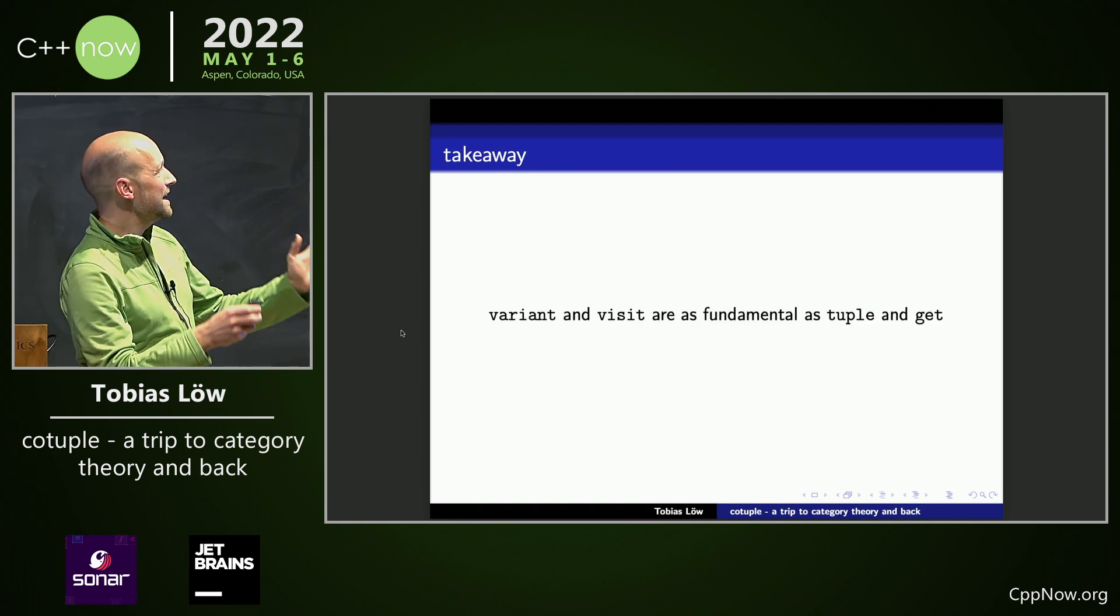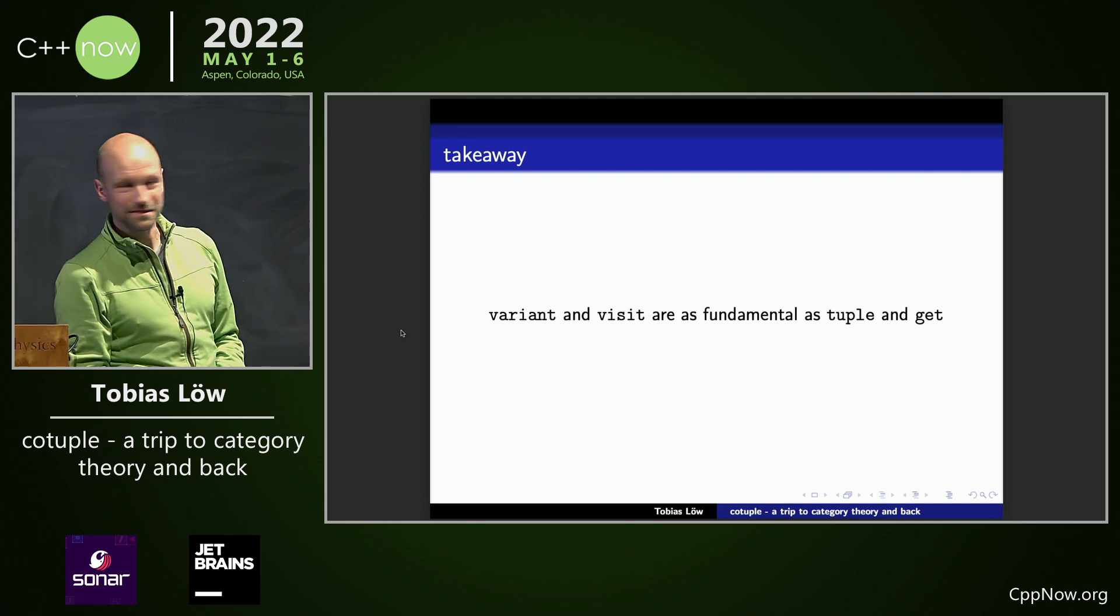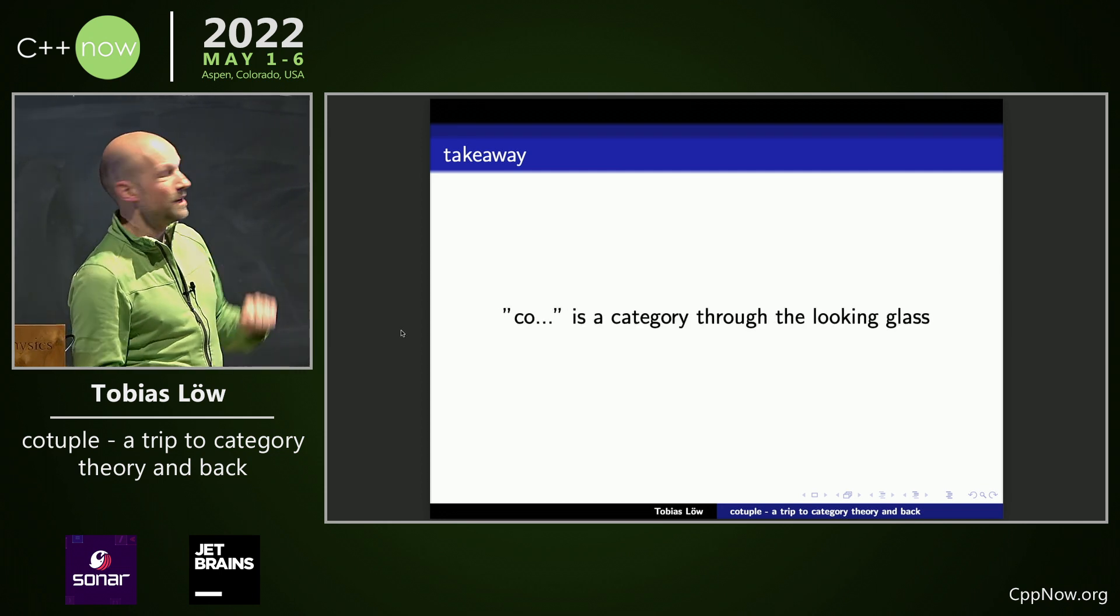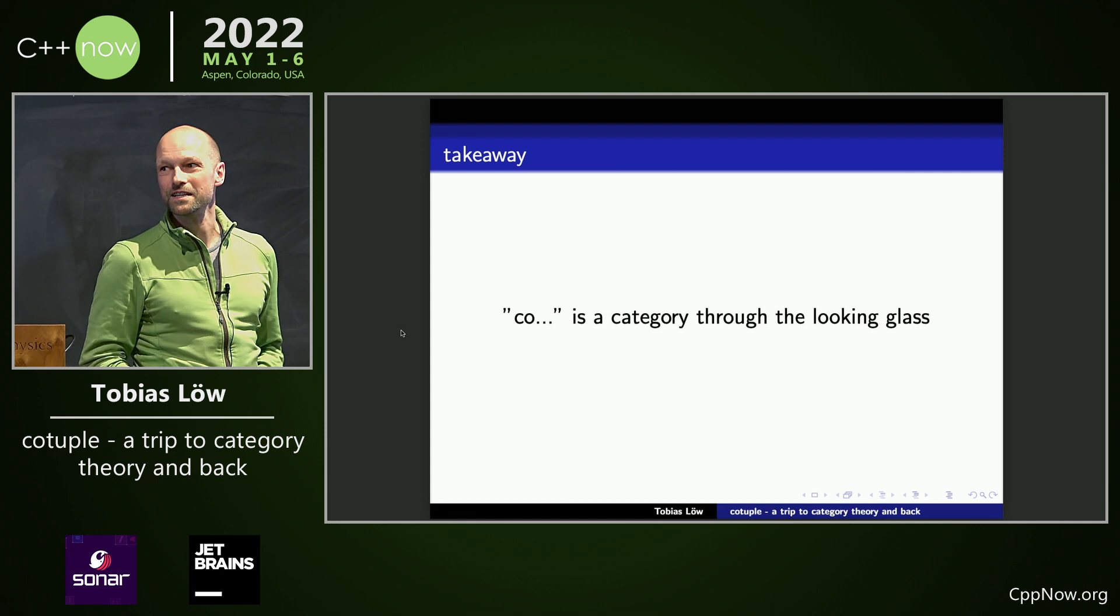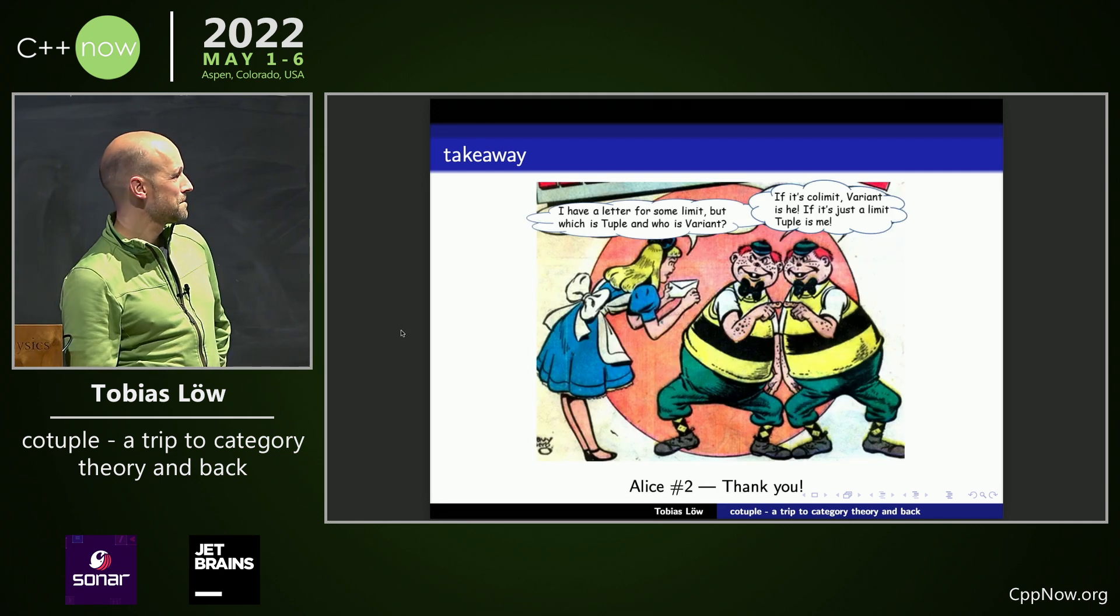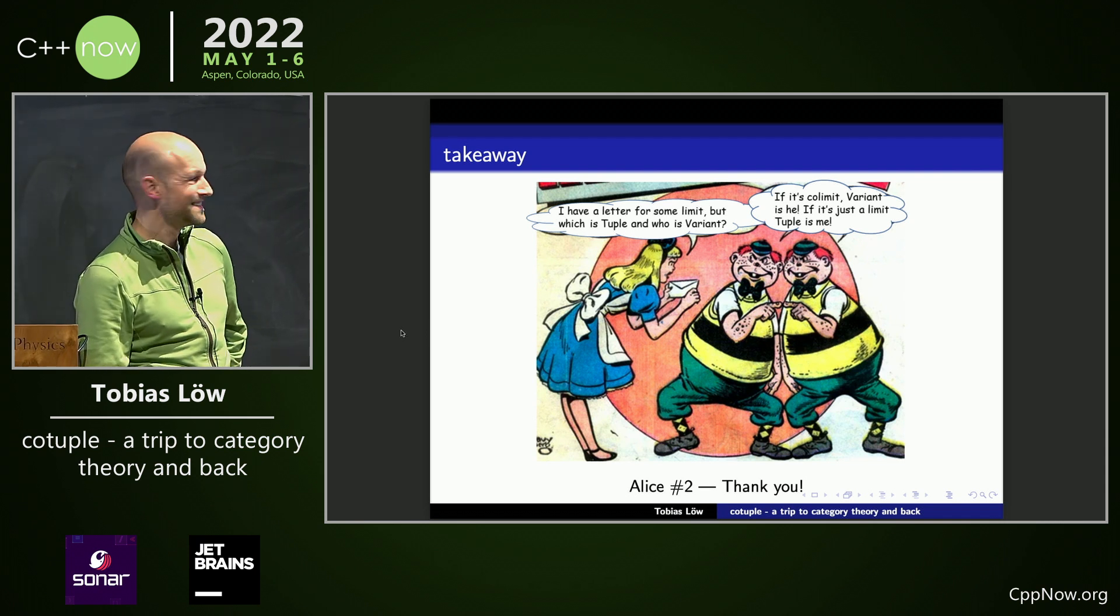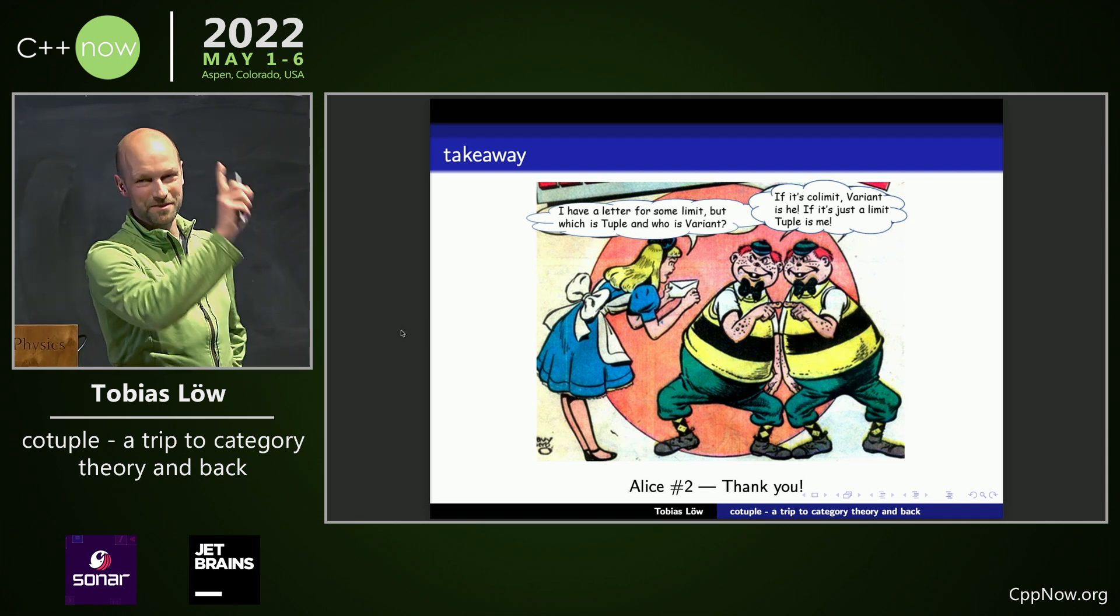Here's the takeaway. Variant and visit are as fundamental as tuple and get. And co is a category through the looking glass. All with the words of Lewis Carroll. That's Alice too. Thank you.